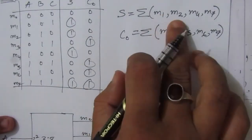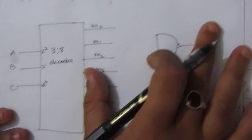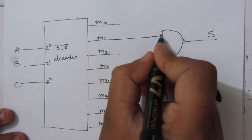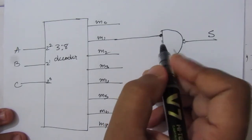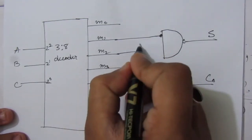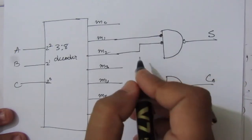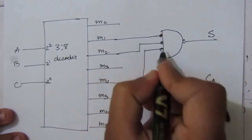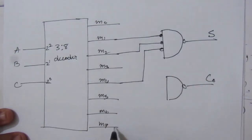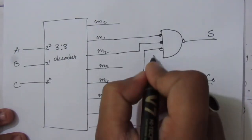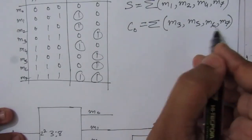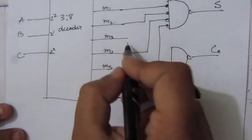For the sum output, we need m1, m2, m4, and m7. Take a line from m1 and use a bubble (inverted input) on the NAND gate, then connect m2, m4, and m7 similarly with bubbles. This gives the sum output.